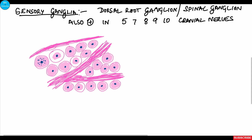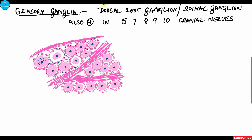These unipolar neurons are surrounded by small neuroglial cells known as satellite cells — also called capsular cells. The nerve fibers that run between the bundles of cell bodies are thick myelinated nerve fibers.